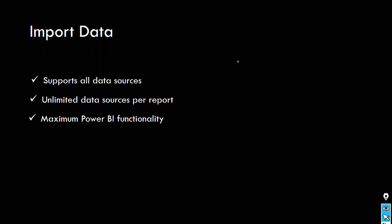There is something called the X-Velocity engine — that is the heart of Power BI. Earlier it was called VertiPack. This is the engine, a piece of software, and it is the driving force behind the import data connectivity mode. What it does is compress your data before loading it into memory. The X-Velocity engine kicks in automatically when you use the import connectivity mode.